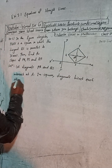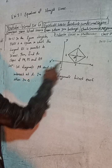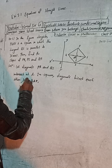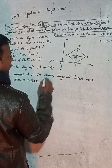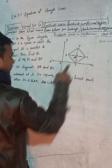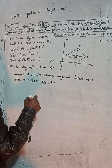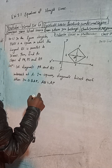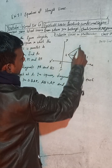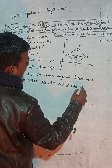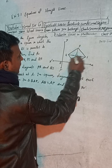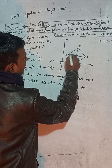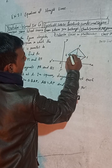In triangle QAP: AQ is equal to AP, and angle PAQ is equal to 90 degrees. Since two sides are equal and the included angle is 90°, this is an isosceles right triangle, so the base angles are equal.